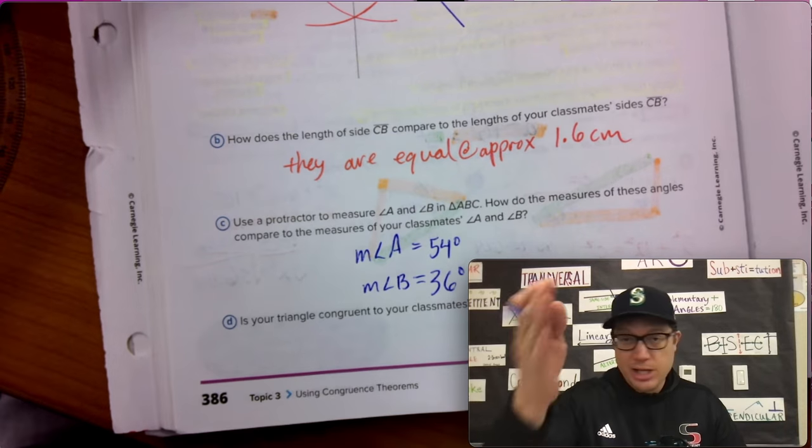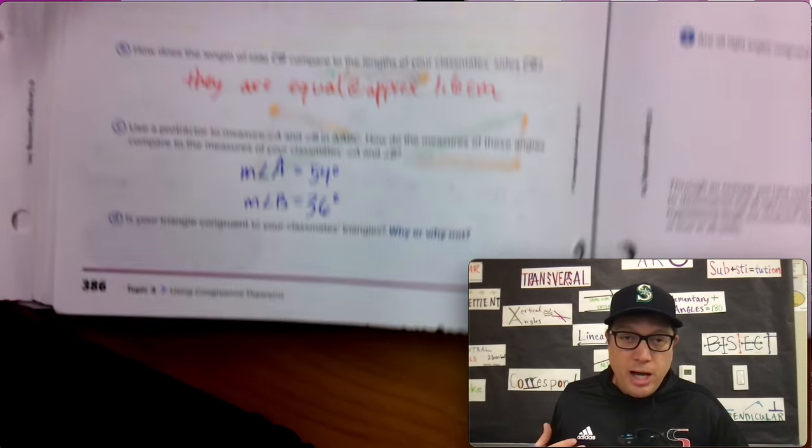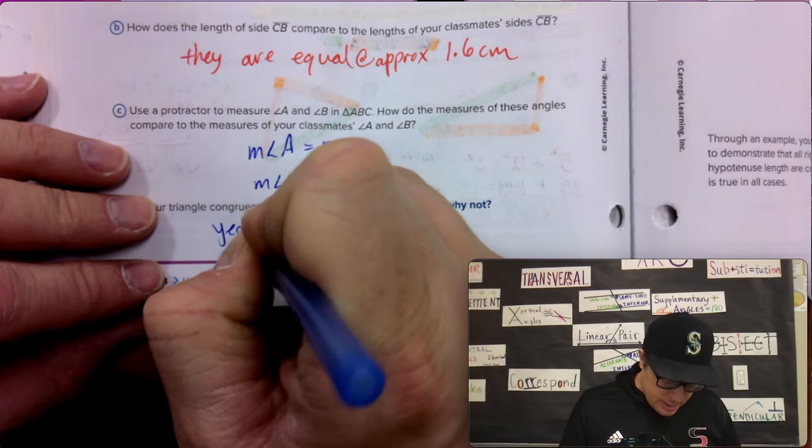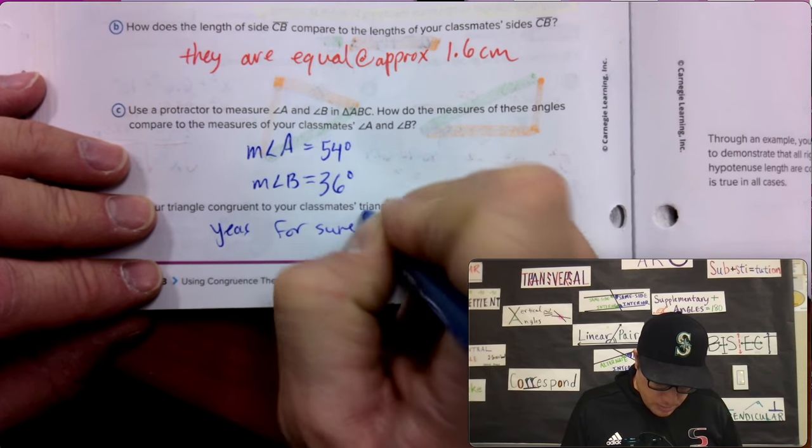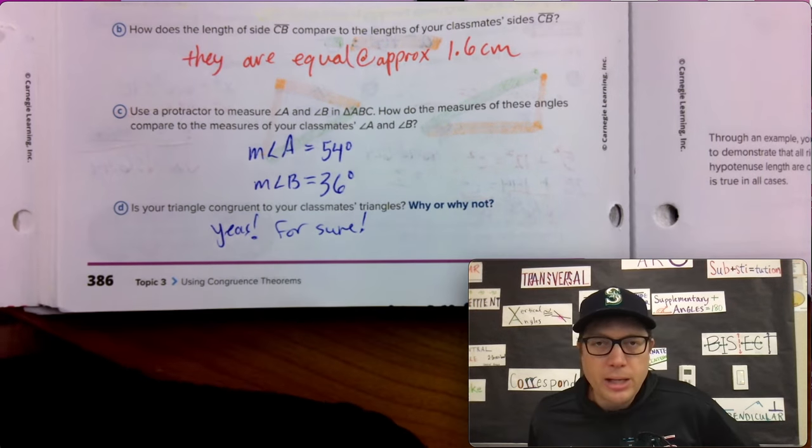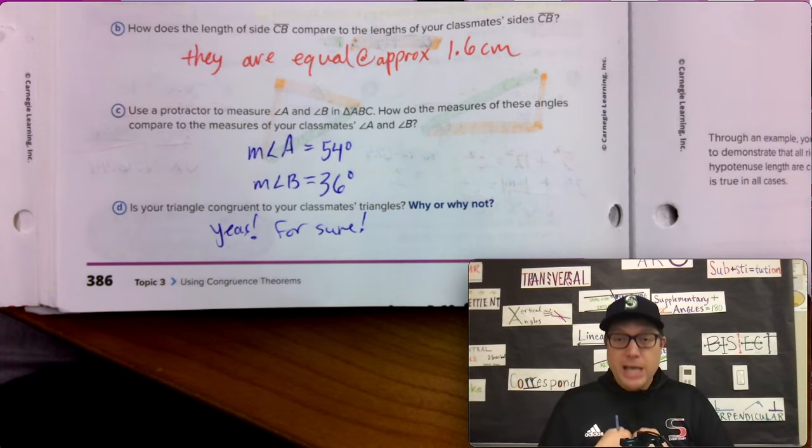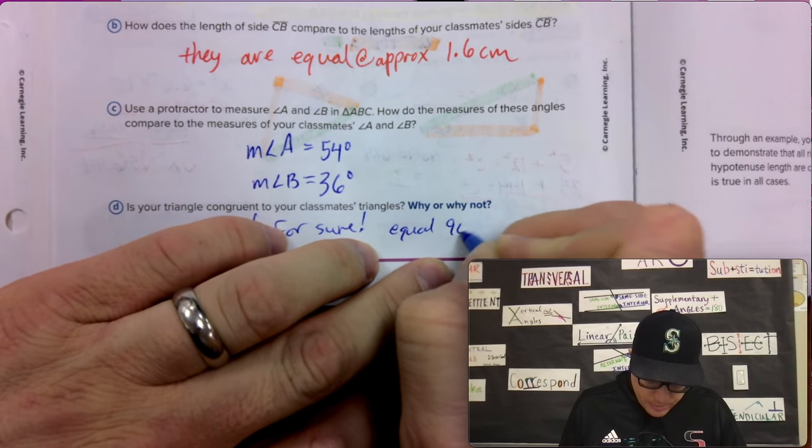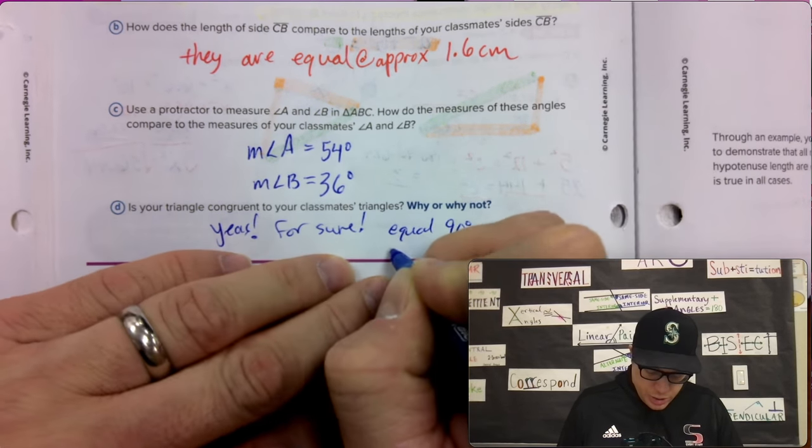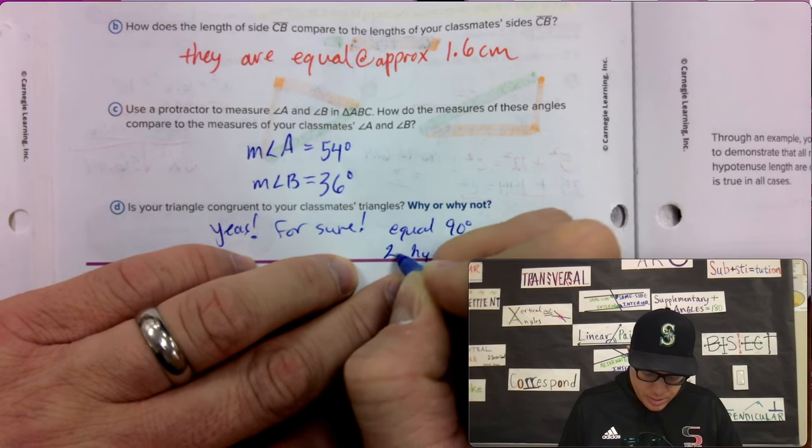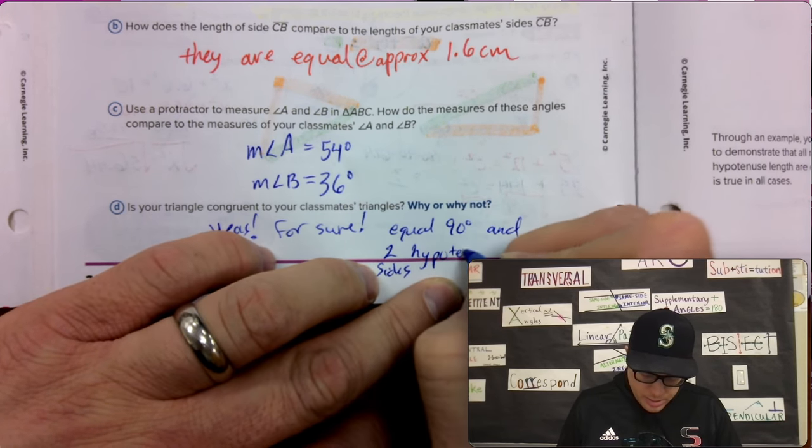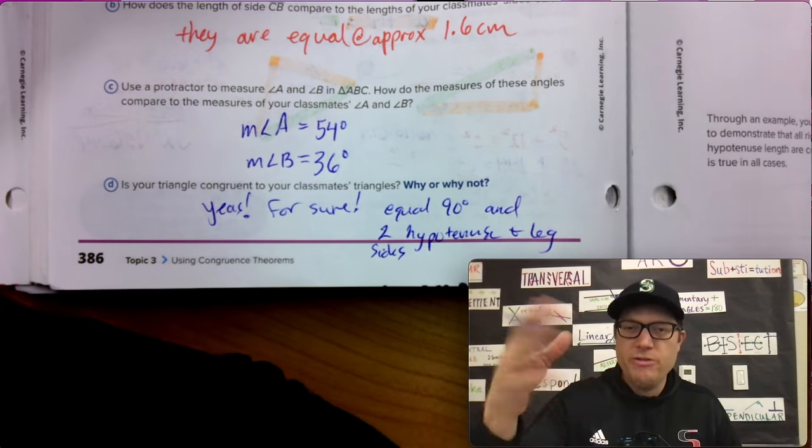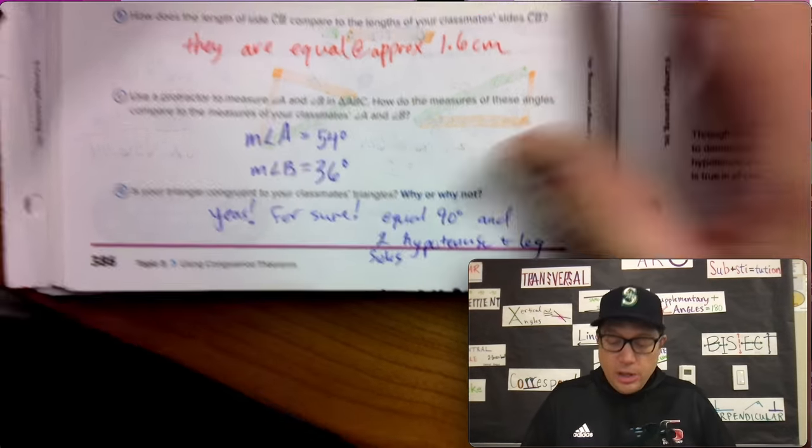These are equal to each other because you made your triangles exactly the same way I made mine. Is your triangle congruent to your classmates? Yes, for sure. Why would that be? We made equal line segments with a 90 degree angle. So we have equal 90 degrees and two, as in a hypotenuse, two sides, as in a hypotenuse and a leg. Those match. And because those match, we've made congruent triangles. That's what we're going to study on the next page.